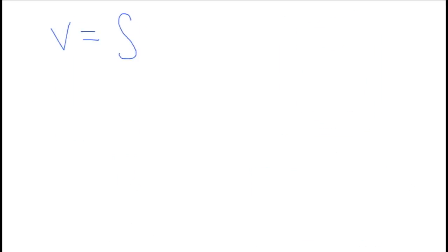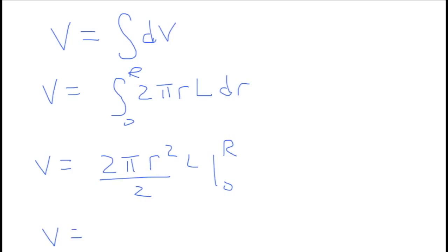We can set up our integral as we did before and substitute ideas from our drawing. The limits on R are once again 0 to capital R. We get an answer of pi r squared L, just like you would expect.